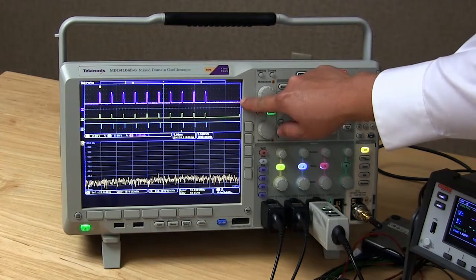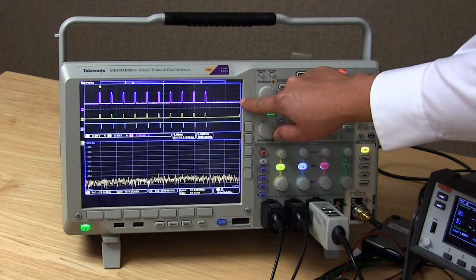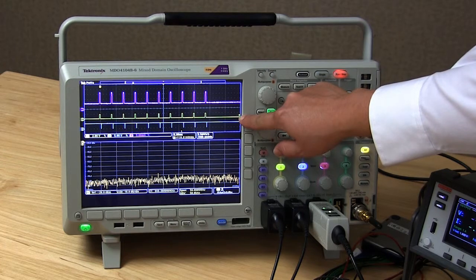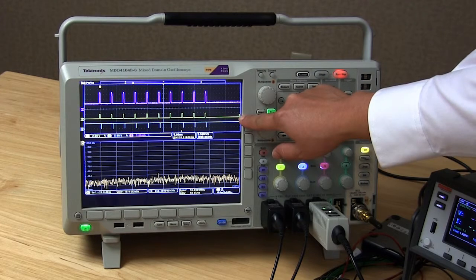The purple trace at the top is the current flowing into the wireless module. The yellow trace in the middle is the trigger signal that starts the transmission and triggers the Series 2280S power supply to measure.